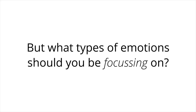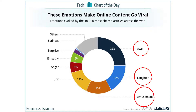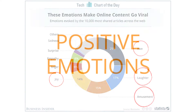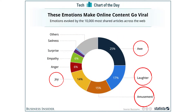But what types of emotions should you be focusing on? Here's a chart from Business Insider that was derived from Statista, which is a statistics portal. As you can see, content that makes a person feel awe and laugh are the most shared type of content, followed by amusement and joy. If you take a moment to study this, you'll realize that these are positive emotions. When people feel good or entertained by what they read or see, they're more likely to share your content.